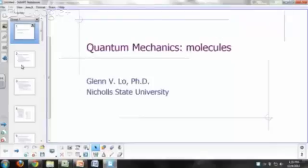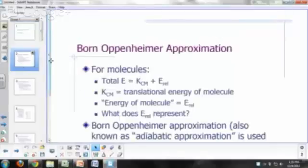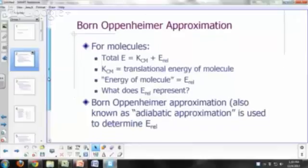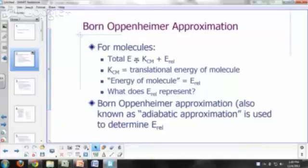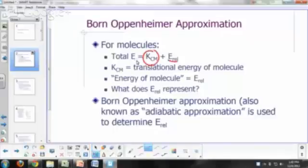For molecules, in this particular case, we have to use what is known as the Born-Oppenheimer approximation. For molecules, your total energy is just the sum of the translational kinetic energy and the relative energy. Just like any multi-particle problem, we separate out the motion for the center of mass right away.